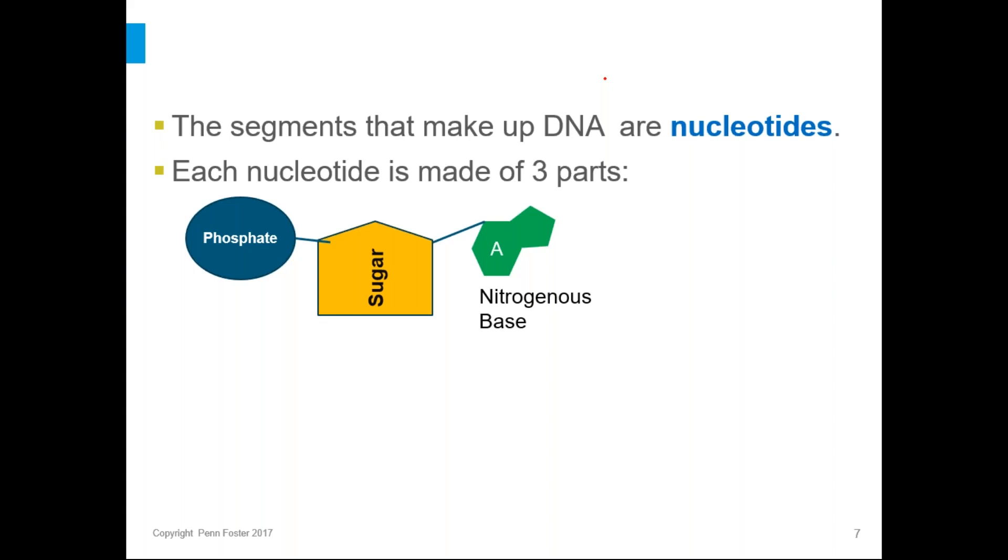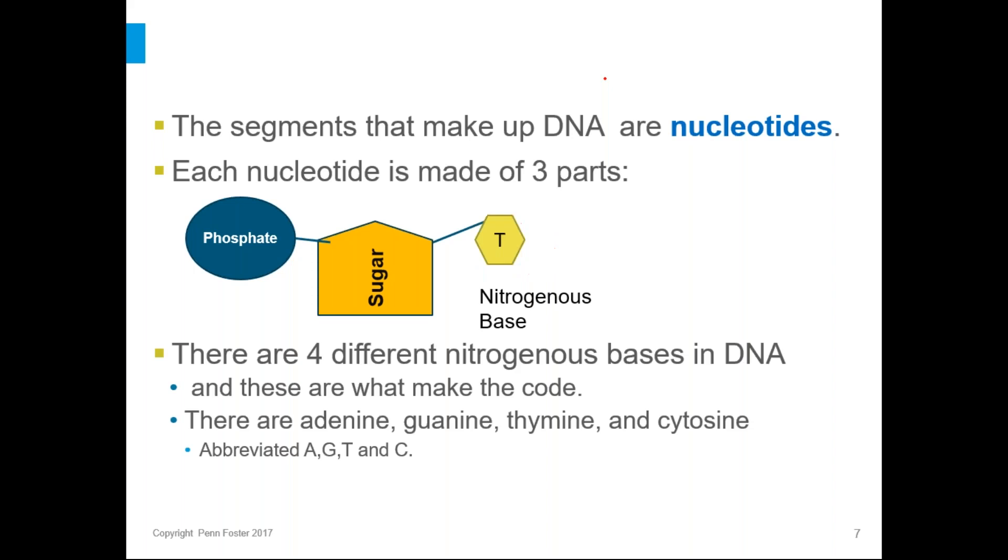So there's four different nitrogenous bases. There's adenine, guanine, cytosine, and thymine. And those are abbreviated A, G, C, and T. So you are definitely going to need to know those letters, and you're probably going to need to know those whole words: adenine, guanine, thymine, and cytosine. And you should know the three parts of the nucleotides. So those are called the nitrogenous bases, and the other two parts are phosphate group and a sugar. And you put together a whole bunch of nucleotides to get DNA.